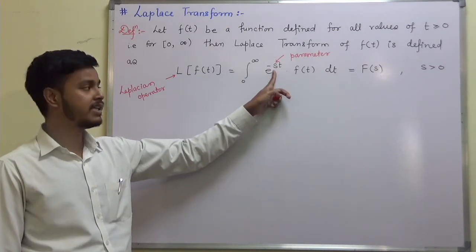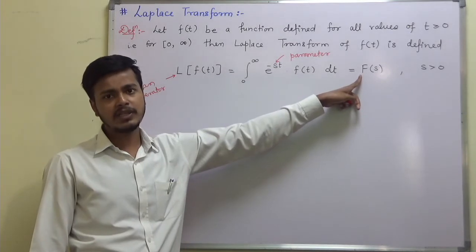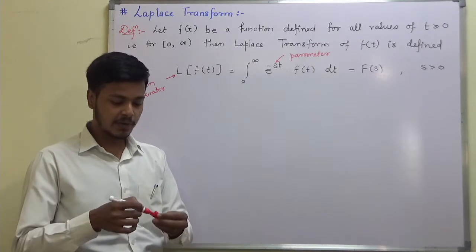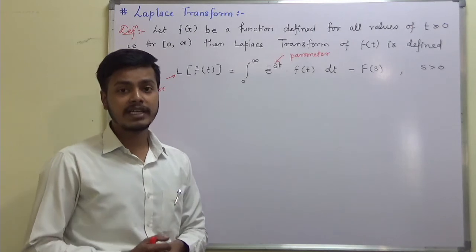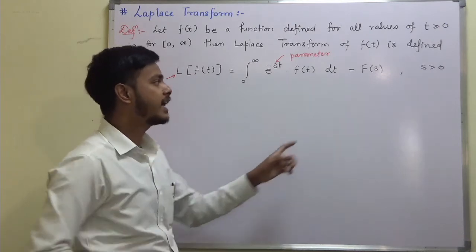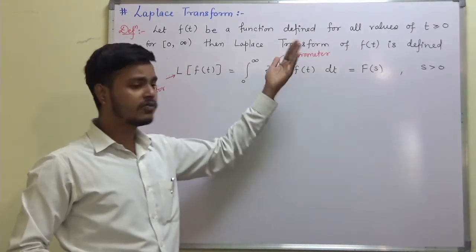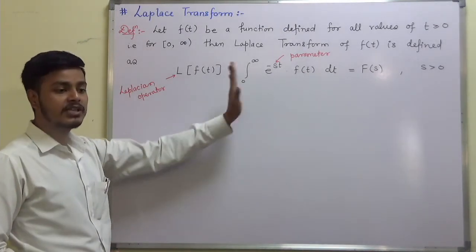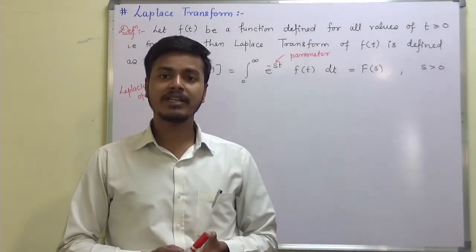The Laplace transform of f(t) is found in terms of the parameter s. The domain is zero to infinity, and F(s) is the notation for the Laplace transform of f(t). So you can see that it is a way of converting a function in one domain to a function of another domain — a function of t to a function of s, that is, time domain to frequency domain.